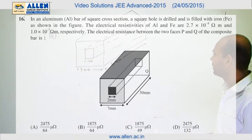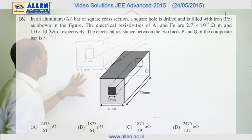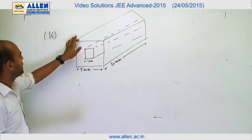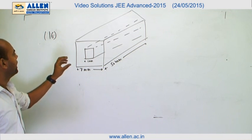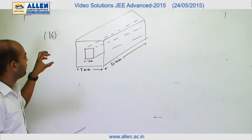Question number 16 of paper 1 is a simple question of parallel combination of two resistances. They have given a bigger aluminum cuboid with a cavity, and a ferrous cuboid is fitted in this.